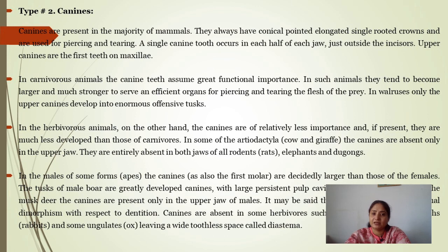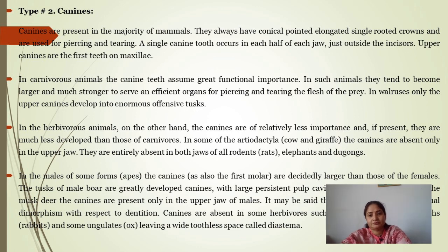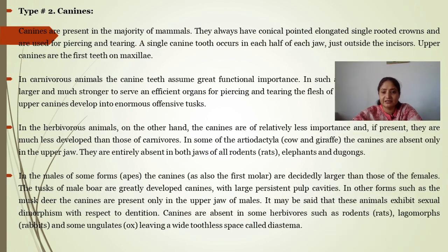The canines are the first teeth on the maxillae. In artiodactyls, the incisors and canines are both absent in the upper jaw, while in the lower jaw they are present. In males of some forms such as apes, the canines and also the first molar are decidedly larger than those of the females. The tusks of male boar are greatly developed canines with a large persistent pulp cavity.